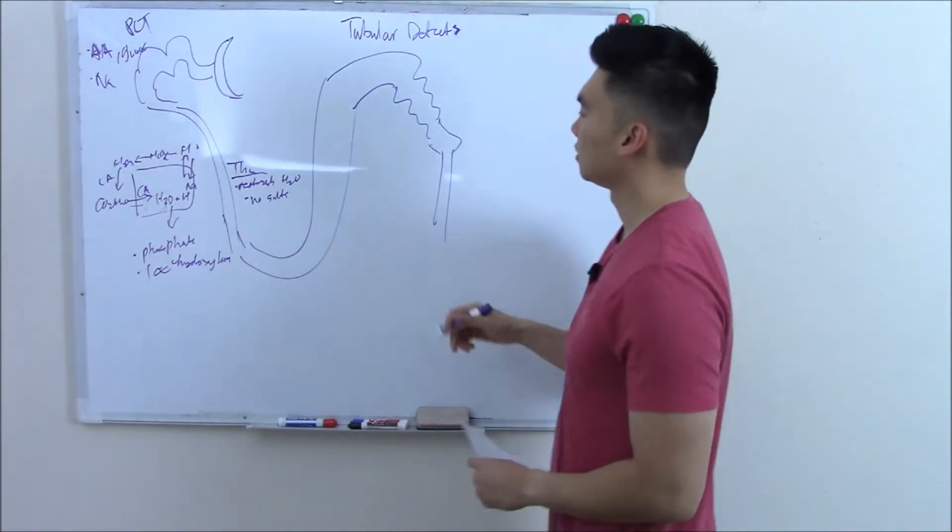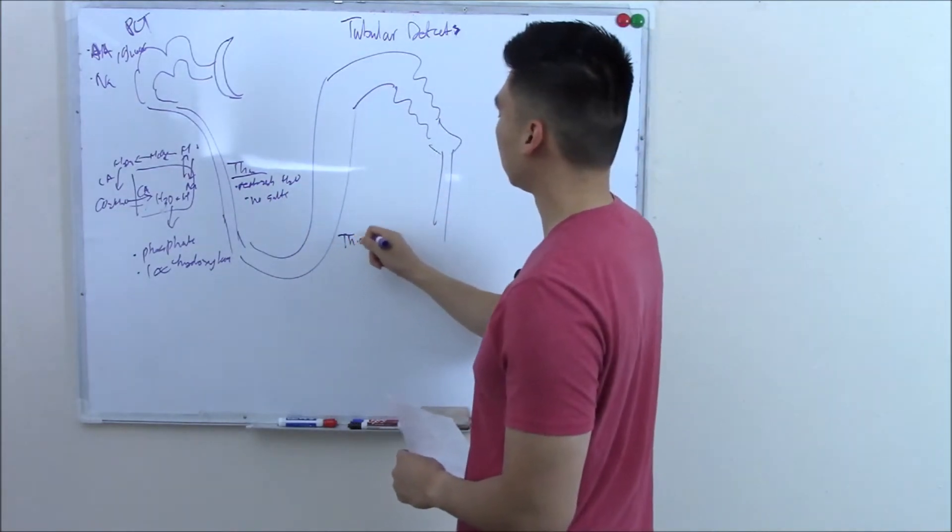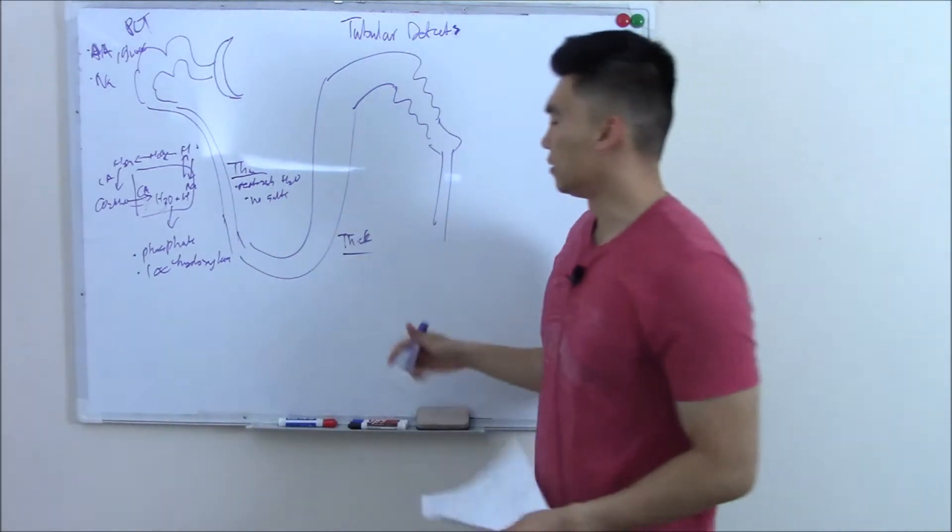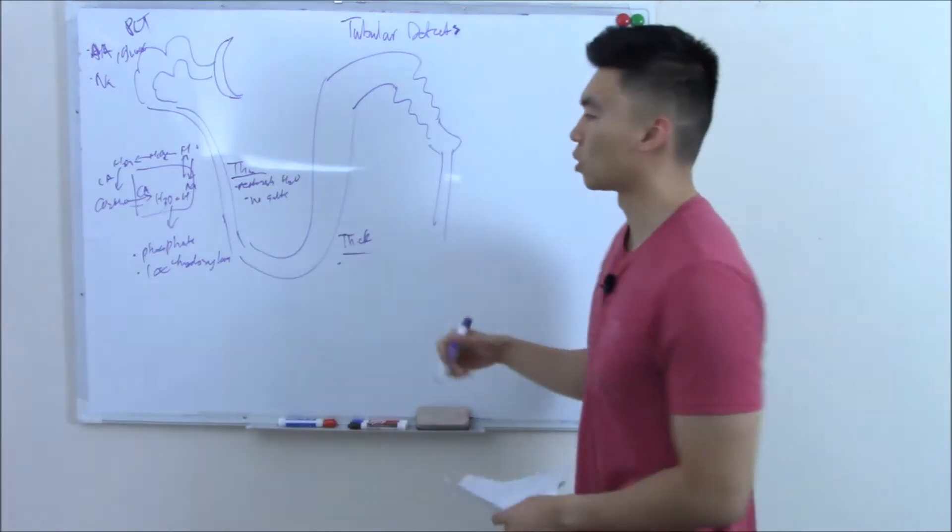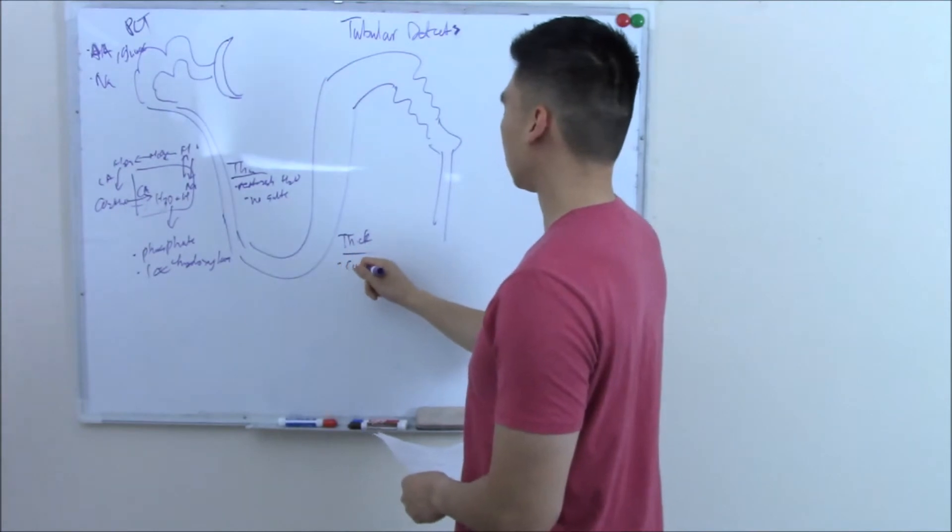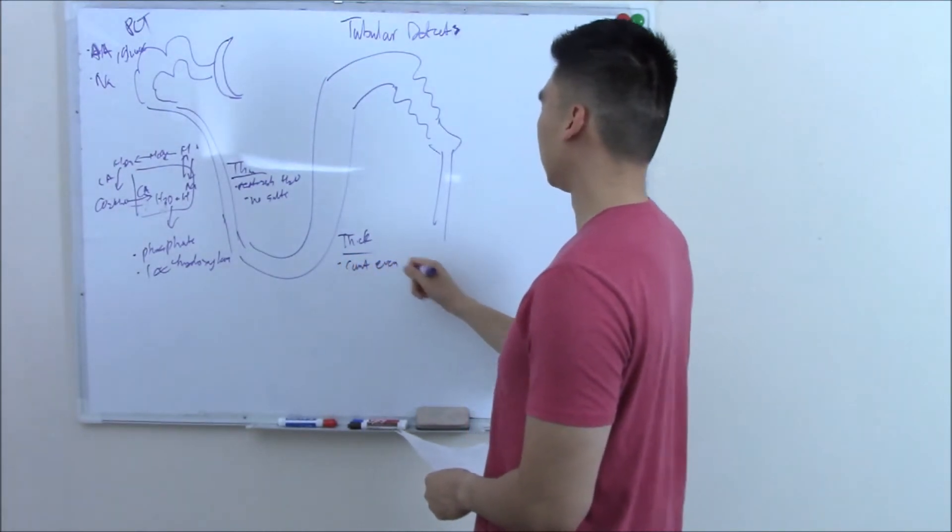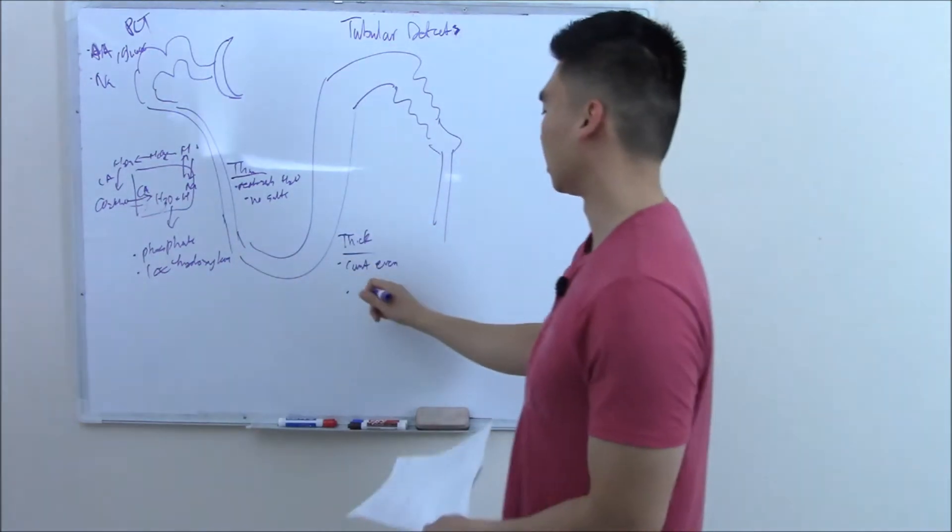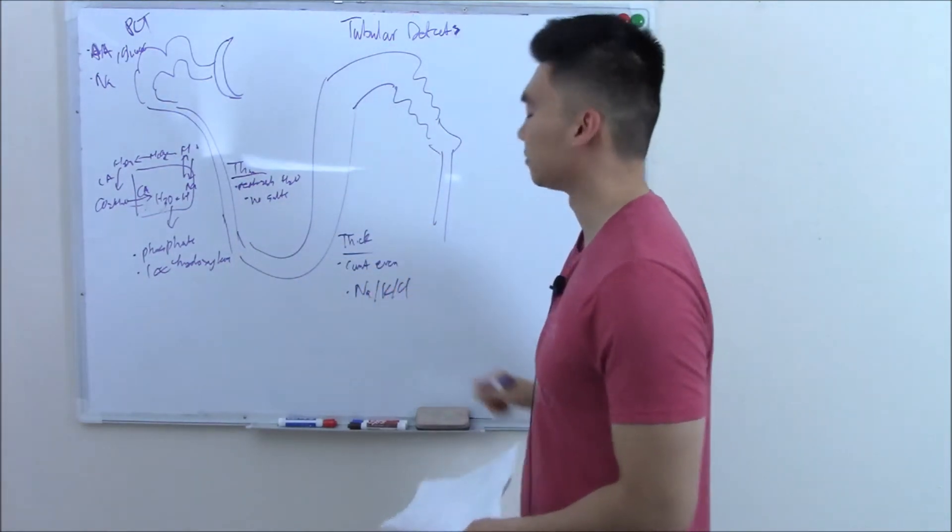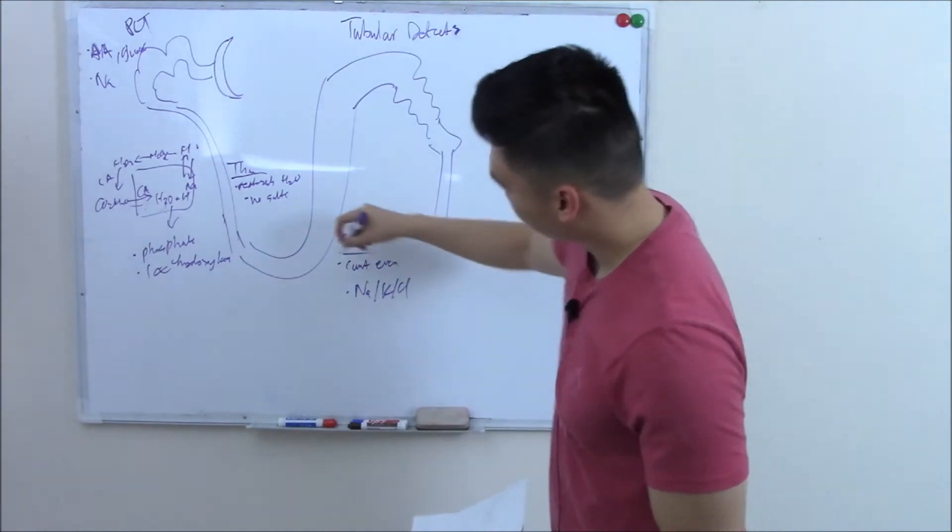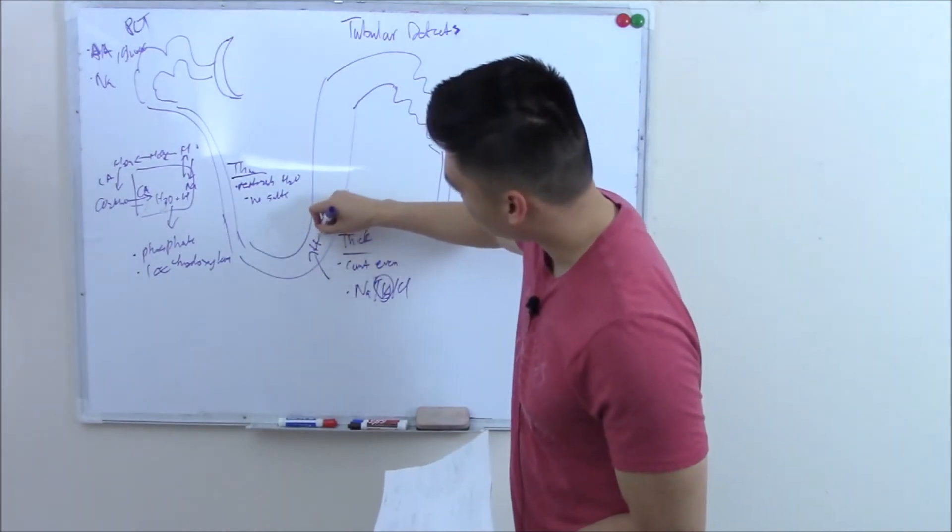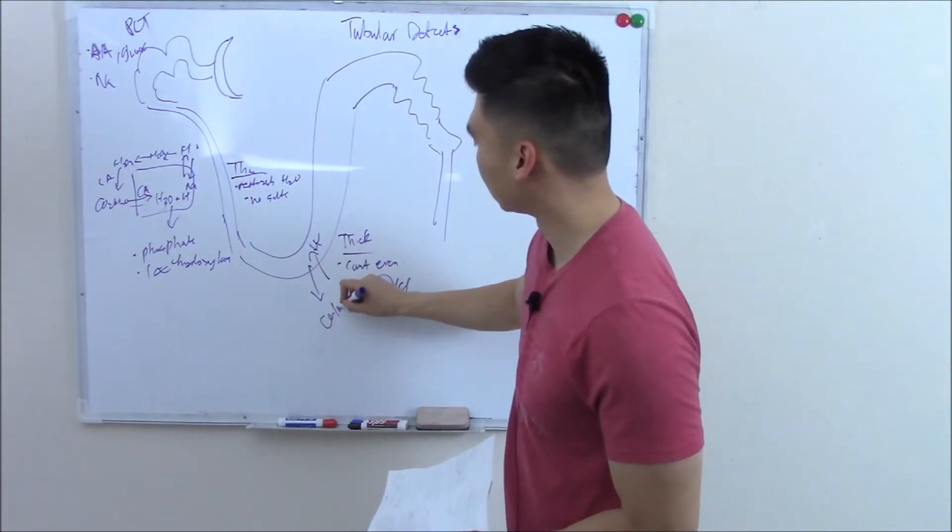How about your thick ascending limb? That was the mortal enemy of your thin. So whereas thin likes to reabsorb water, this can't. Whereas this can't reabsorb salt, it just loves salt via the sodium-potassium-chloride channel. And then we said potassium never gets the message, leaks back, makes positive ions, and that pushes calcium and magnesium over.